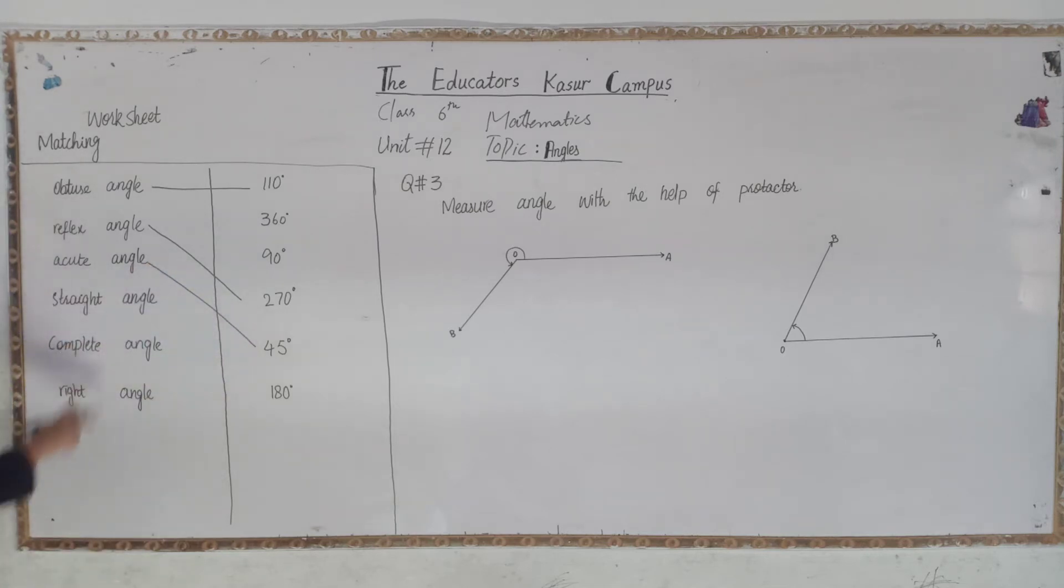Straight angle definition, which is the straight line, which is the straight angle. This is 180 degrees.